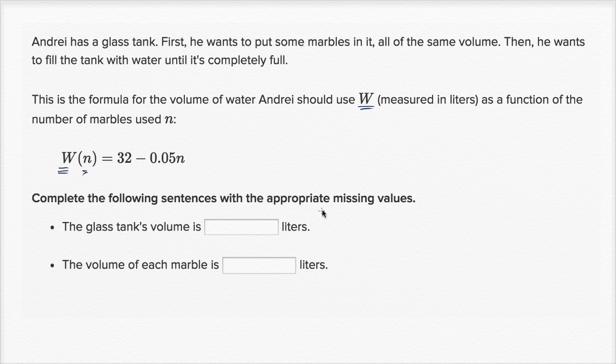Complete the following sentences with the appropriate missing values. The glass tank's volume is blank liters. The volume of each marble is blank liters.